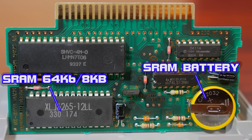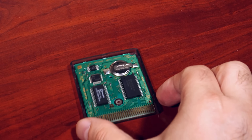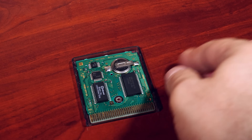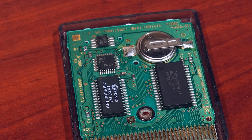To enable saves, cartridges pair an SRAM circuit with a coin cell battery, which provides backup power when the console is off. This setup is fast for reads and writes and also has unlimited write cycles. However, the biggest problem is that the standard battery life of a coin cell battery lasts around 10 to 20 years before draining completely, which has the side effect of corrupting saves forever.